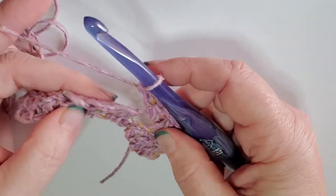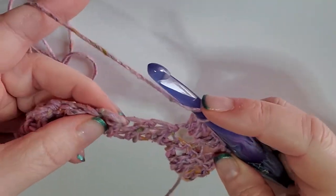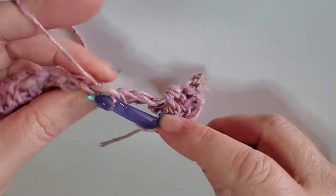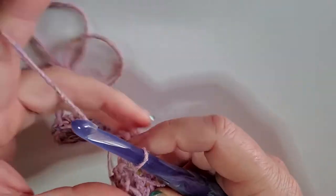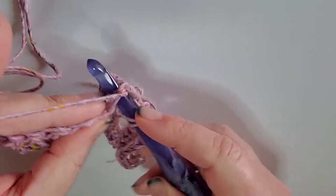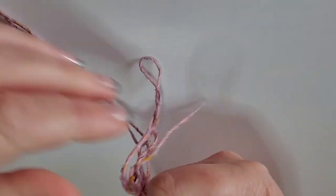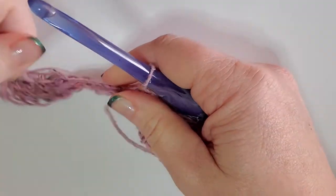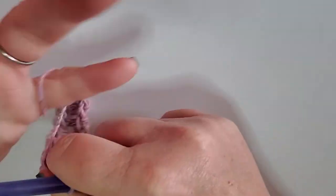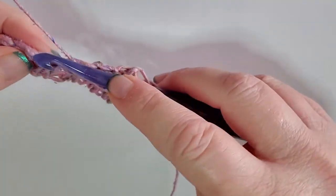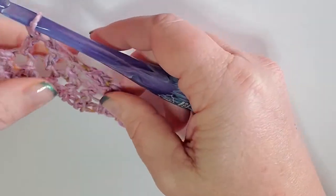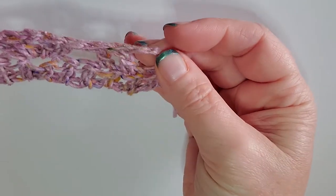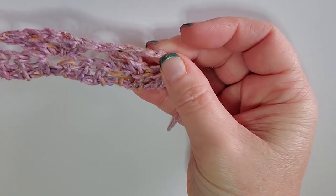That is going to give us this lovely little shell. Then from here we skip two, one, two, and in the next stitch goes a double crochet. There's one double crochet, and then in the next stitch another double crochet. Then we're going to do one more double crochet, so we have three, just like we have on our end here. We have three double crochets on this end.